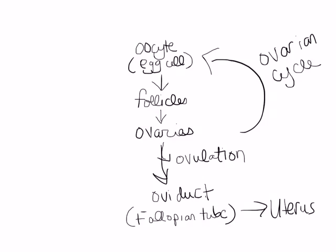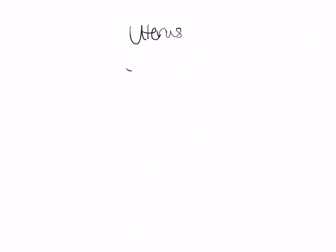This process happens every month unless a woman is currently pregnant — we'll talk about why in a moment. What happens next is dependent entirely on whether or not a sperm is present. Starting with the case where a sperm is not present: within the uterus, a lining of blood vessels and soft tissue has built up, called the endometrium. The endometrium would be the protective place for the egg to settle and grow, but in a case with no fertilization, the endometrium is going to leave the uterus along with the oocyte.